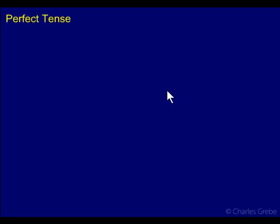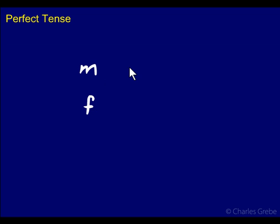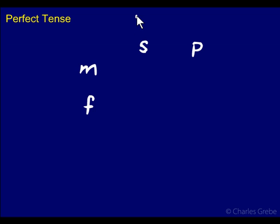Now if you remember our noun paradigms, we had gender and number. So we had a grid for nouns — masculine and feminine down one side, and then across the top we had number: singular and plural. We had dual as well, but we won't worry with dual for the verbs. So we had gender and we had number.